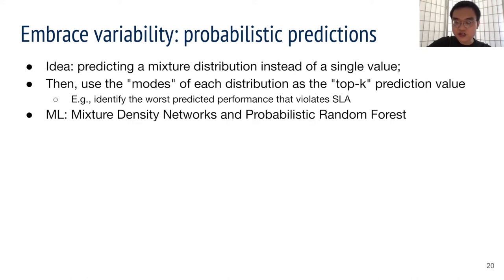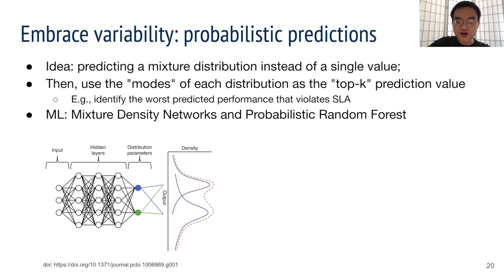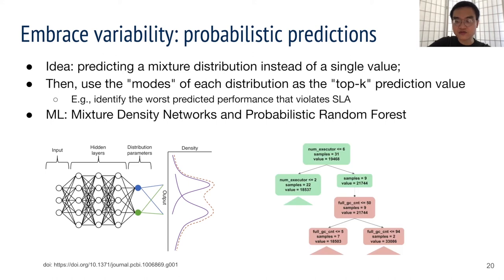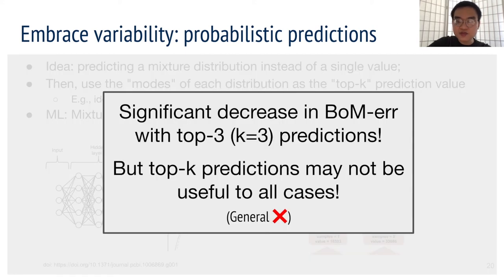We did this by changing machine learning models. We applied mixture density networks, a variant of neural networks that produce probabilistic outputs, and we apply a similar idea to random forest to achieve the same. Our paper has more details on the results. In short, this approach substantially improves accuracy in many cases, but notice that there will be applications and use cases where we can't or don't want to use these probabilistic predictions.